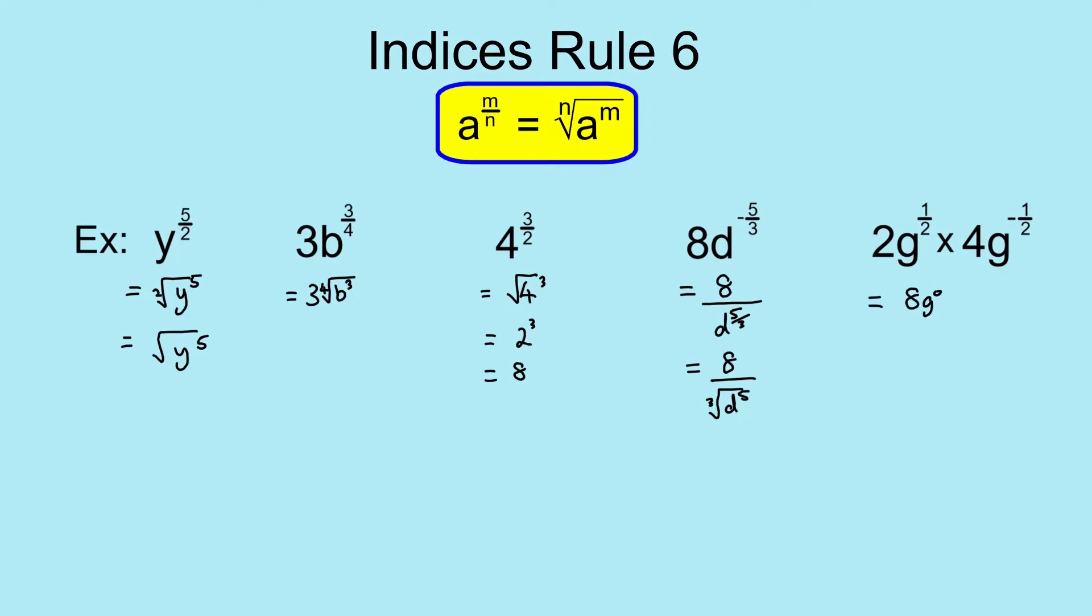So we end up with, even though the question started with fractional indices, we end up with no fractions. Remember though, this is going back to rule number 4. We've got 8 times g to the power of 0. You don't really need that line. You can do that in your head if you want. Anything to the power of 0 is 1, so it's 8 times 1, which is 8. And again, that's just shown one example of how the rules can all be mixed together, which quite often happens in tests and exams. So it's something to watch out for.